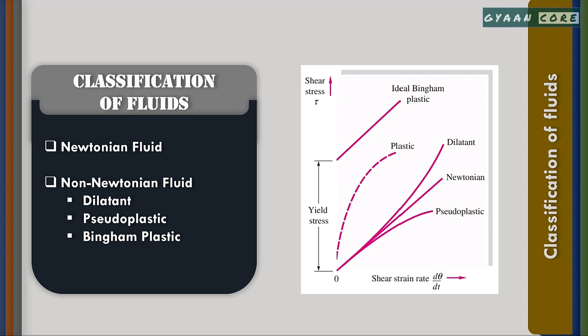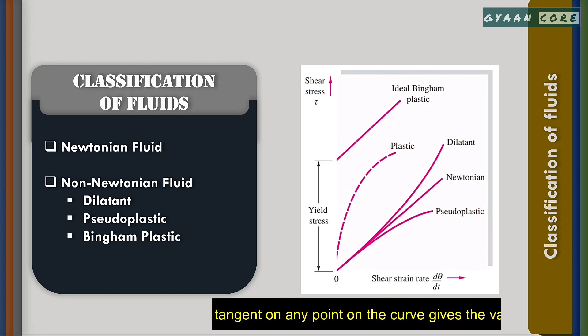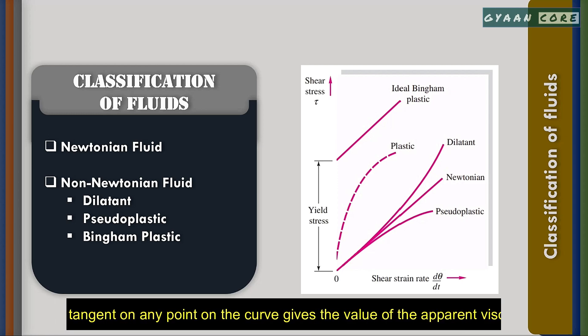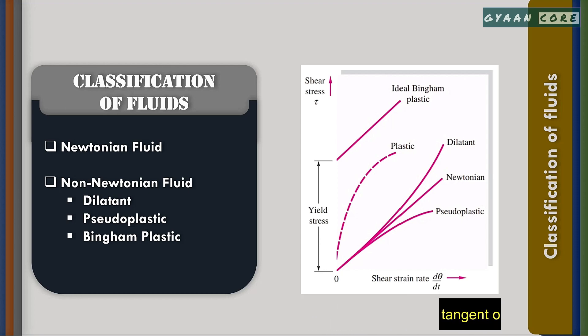Out of non-Newtonian fluids, the dilatant fluid is shear thickening — it increases its resistance with increasing strain rate. Examples are sand in water. The pseudo-plastic fluid is shear thinning and is less resistant at higher strain rate. Examples are paper pulp in water, blood plasma, syrup, and latex paint. A very strong thinning is called plastic. The limiting case of a plastic substance is the ideal Bingham plastic, which requires a finite yield stress before it begins to flow. The yielding is followed by either linear or non-linear behavior.